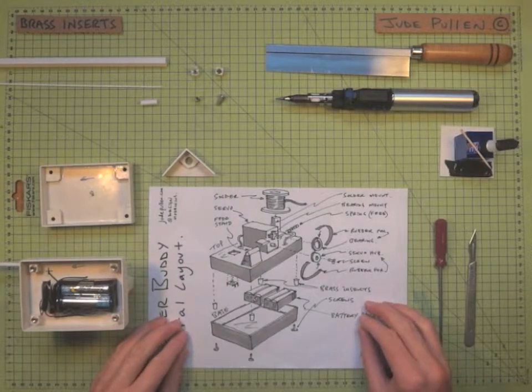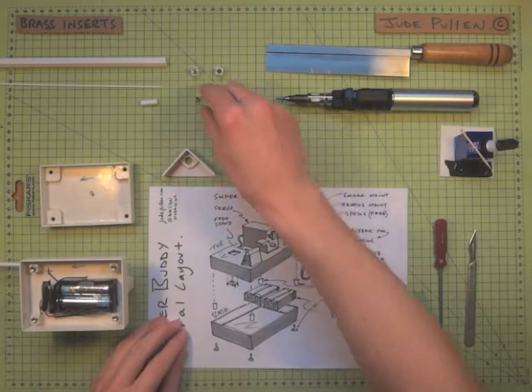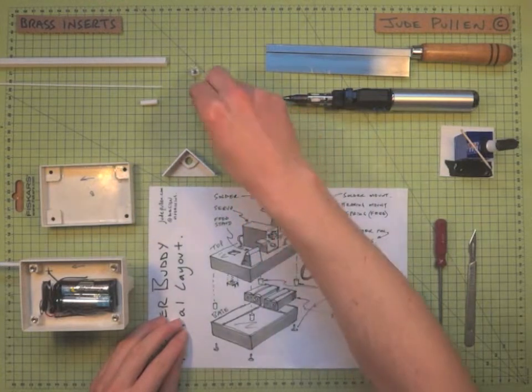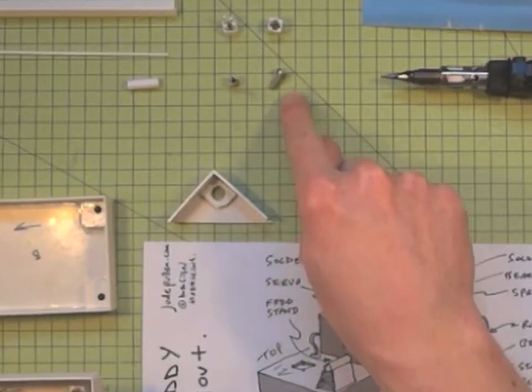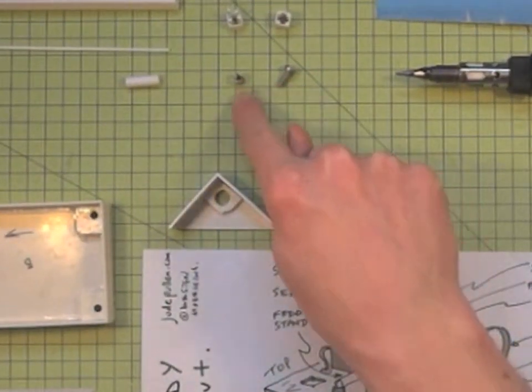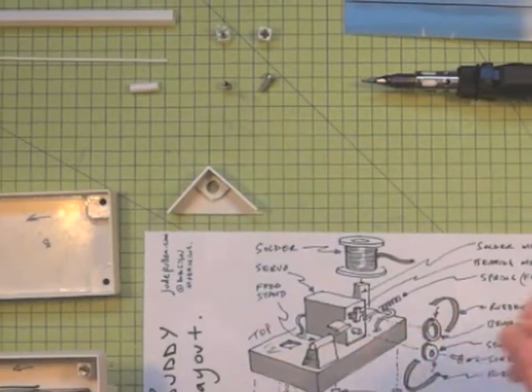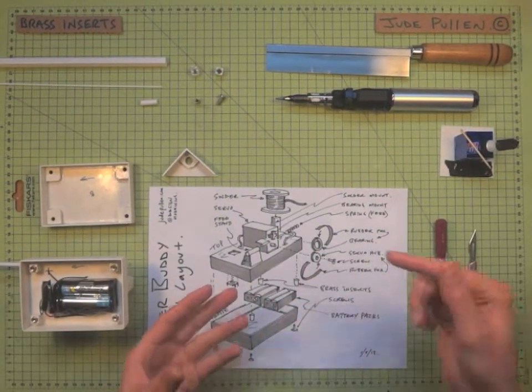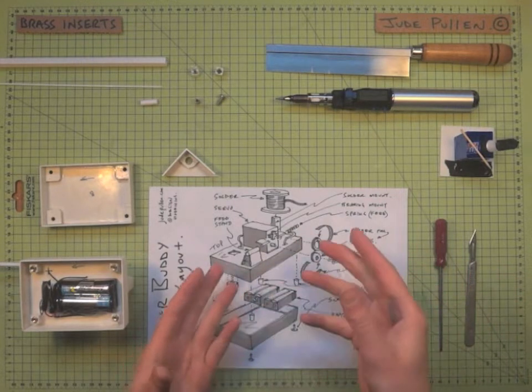Okay, so I thought we'd have a look at brass inserts. These are these little brass things here, and they give a nice fixing for the machine bolt to screw into, so that it doesn't strip the thread over time so easily as if you would just screw a screw into plastic.